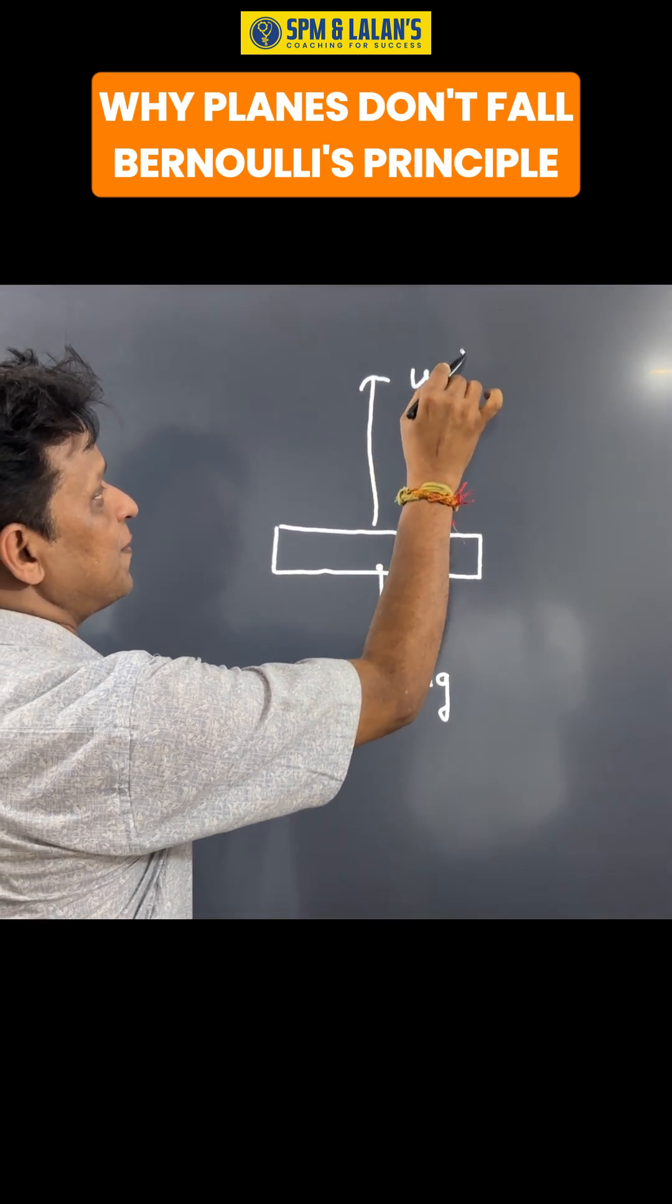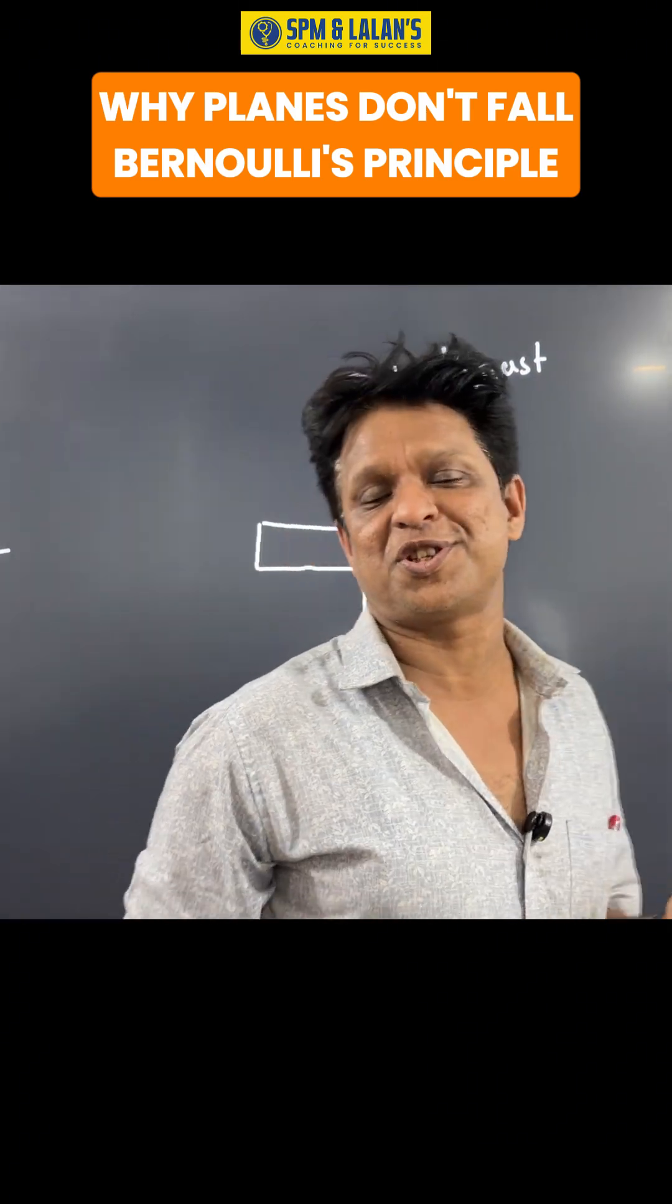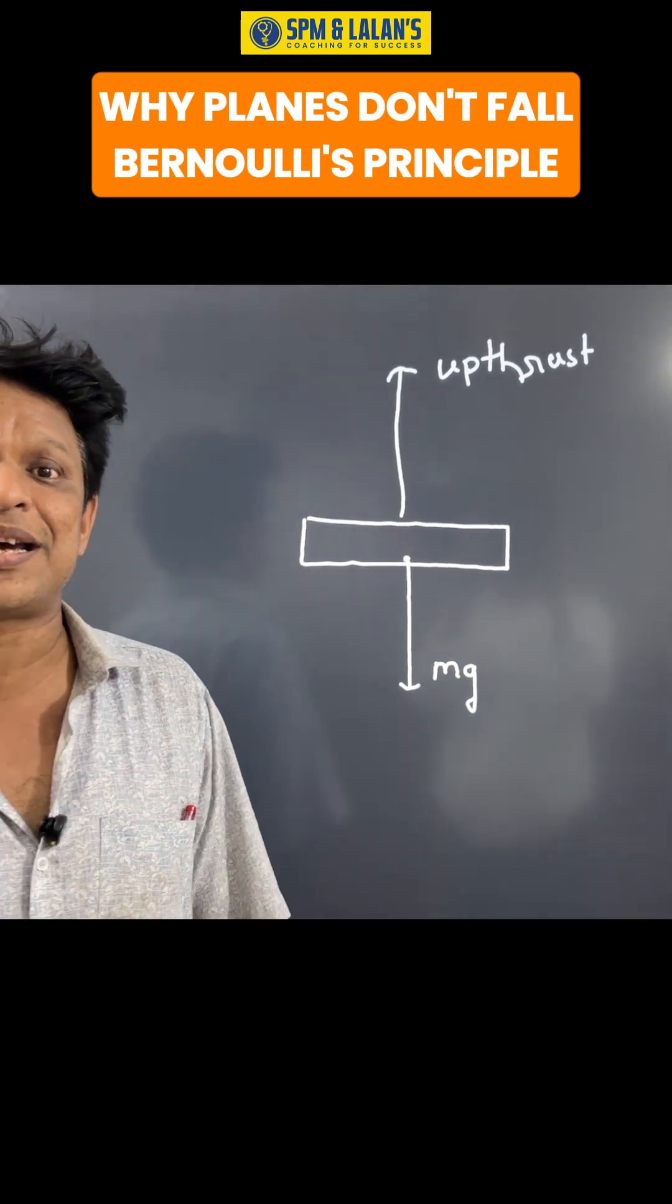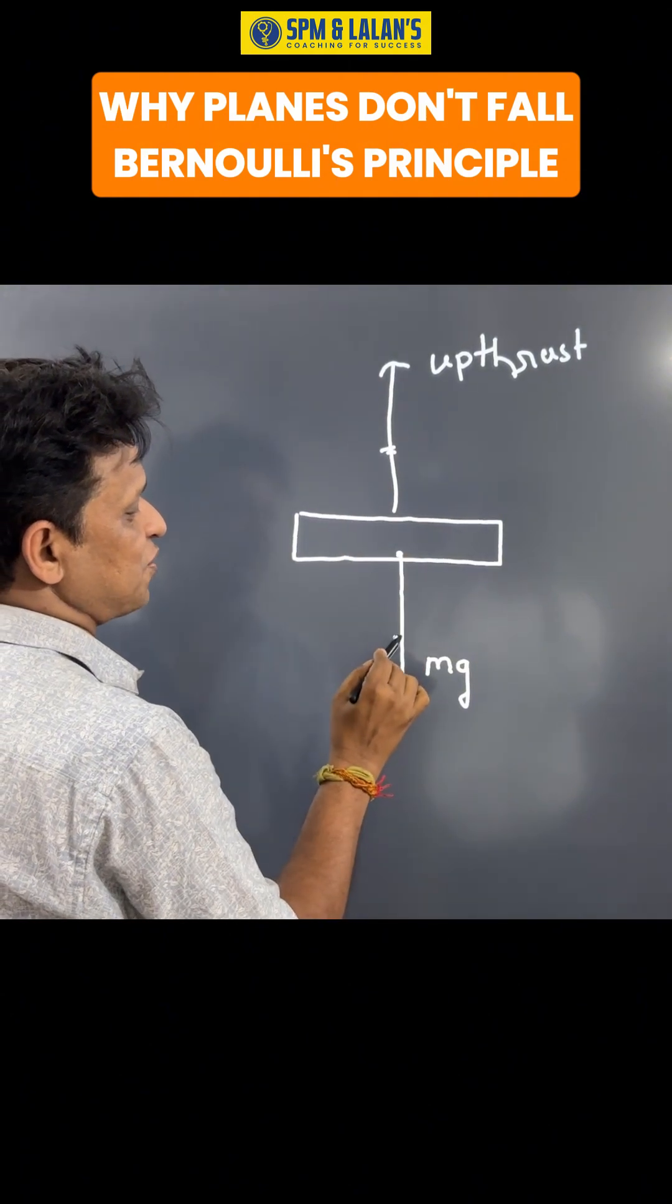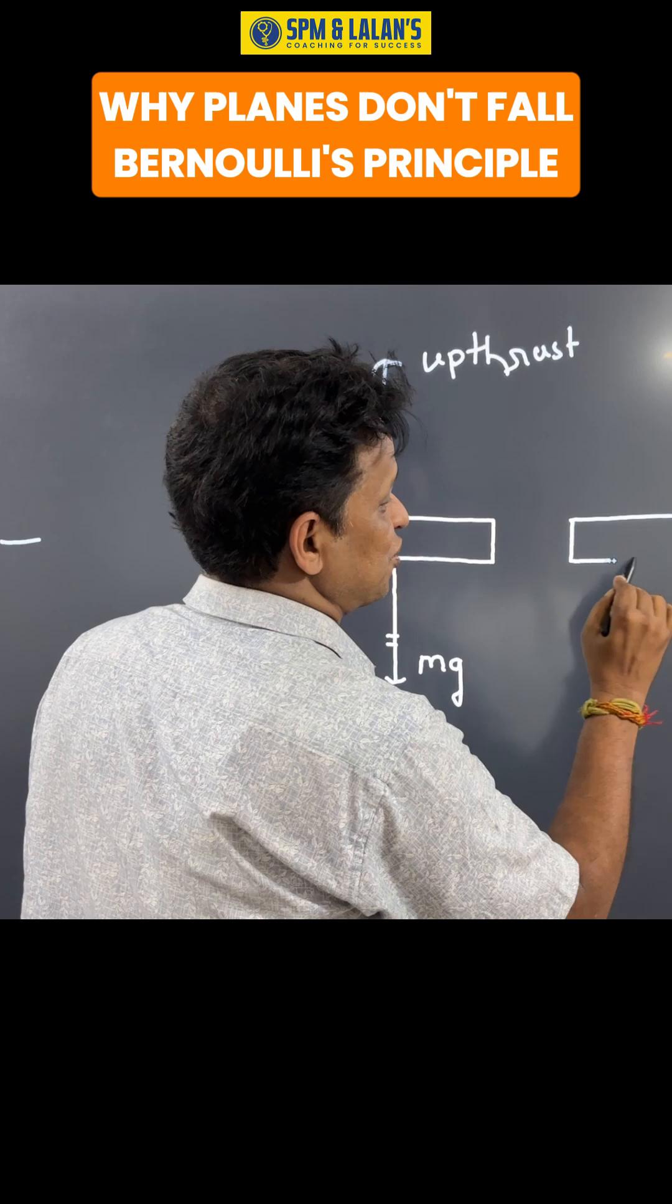Now, how is this upthrust generated? This upthrust is generated by the wings. The wings are made in such a way that this upthrust balances the weight. That's why the airplane remains in the air and is not falling down.